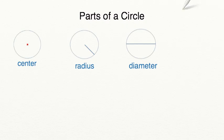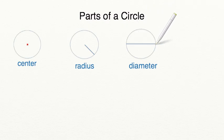The diameter is the distance from one edge to the other edge of a circle, crossing through the center.